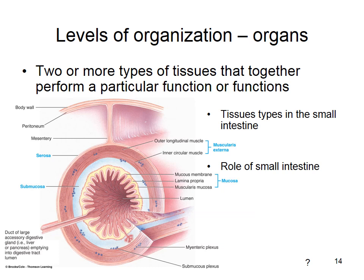Organs are two or more tissue types working together to perform a particular function. In the small intestine, for example, we have epithelial tissue, smooth muscle tissue, nervous tissue controlling that smooth muscle, and connective tissue — all four tissue types working together for digestion and absorption of nutrients.